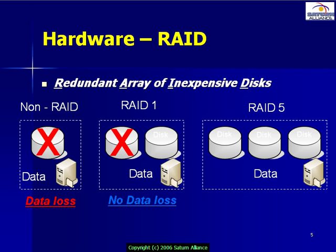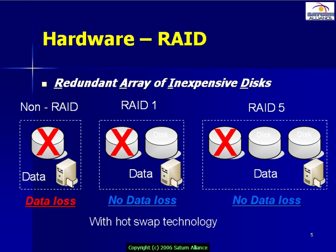Because the information is still on the second disk, users can operate from it — meaning no data loss. The same thing applies with a RAID 5 system on the right: if I lose a single disk, because the information is spread across three disks in total, there is again no data loss. Now, if I also include hardware that incorporates hotswap technology — which a lot of higher-range servers include — it means that if a disk fails, I can replace it while the server is still operating.